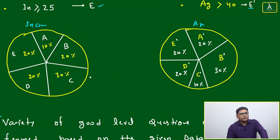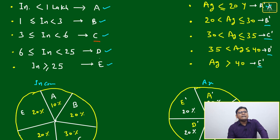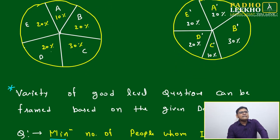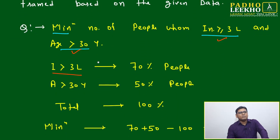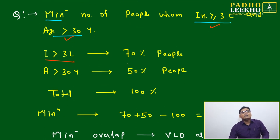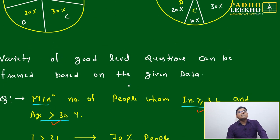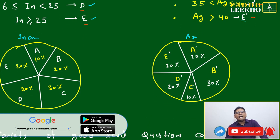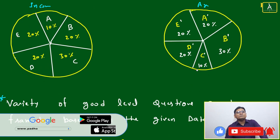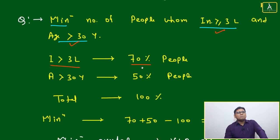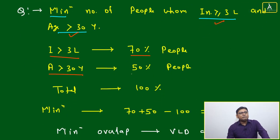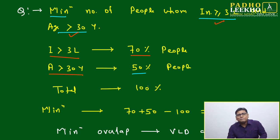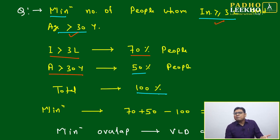We take individual data for both criteria. Income more than 3 lakhs means C, D, and E combined: 30 + 20 + 20 = 70% of people. Age more than 30 years means C-dash, D-dash, and E-dash: 10 + 20 + 20 = 50% of people. Now we have two percentages — 70% and 50% — with a total of 100%. Minimum overlap occurs when there is no unnecessary overlap; minimum means no extra overlap.